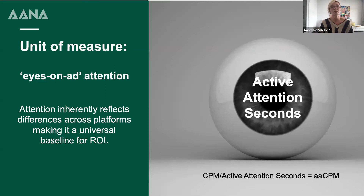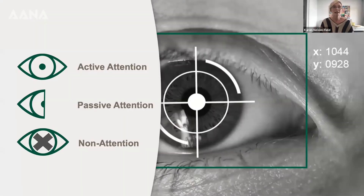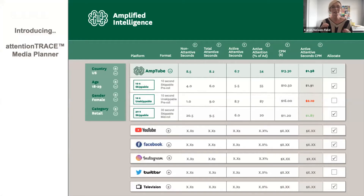We also know that eyes on and active attention inherently reflects differences across platforms. What it essentially means is that human attention transcends all other mediating variables and negates the need to separately measure the things that drive it. The way we collect data is active attention — which is literally eyes on ad and follows it on the screen — or passive attention, which is eyes on the screen but not on the ad, and non-attention.